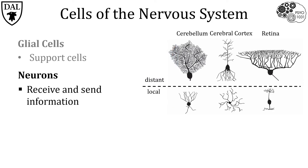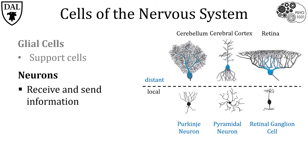Take for example three main structures of the nervous system: the cerebellum, the cerebral cortex, and the retina. In the top row you can see three major distant-projecting neuron types: Purkinje neurons in the cerebellum, pyramidal neurons in the cerebral cortex, and retinal ganglion cells in the retina.